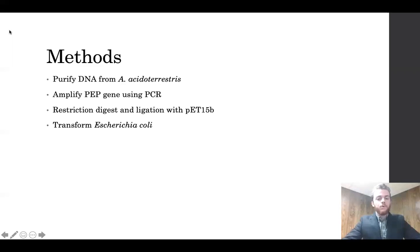That way E. coli could be transformed. Now the large-scale E. coli growth was done, and the cultures were induced with IPTG. That way overexpression of the PEP would happen. And once overexpression happened, the protein was collected using nickel NTA affinity chromatography, so I would get the pure PEP and nothing else.